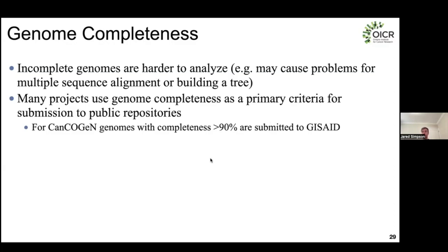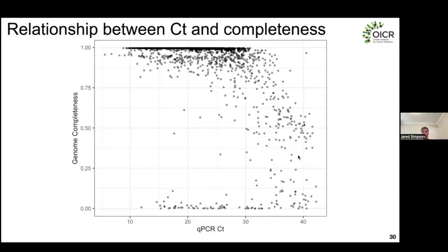Early in the project, we worked out the relationship between CT and genome completeness. A plot from John Tyson at BC CDC shows that after a CT of about 30, genome quality drastically drops and genomes become very fragmented. Once CT is above 35, you're lucky to get about 50% of the genome successfully covered. It's wasteful to sequence high-CT samples, so we set a threshold of CT 30 or below. Different sites with different qPCR machines or assays shifted this boundary somewhat, but most sites settled around CT 30.